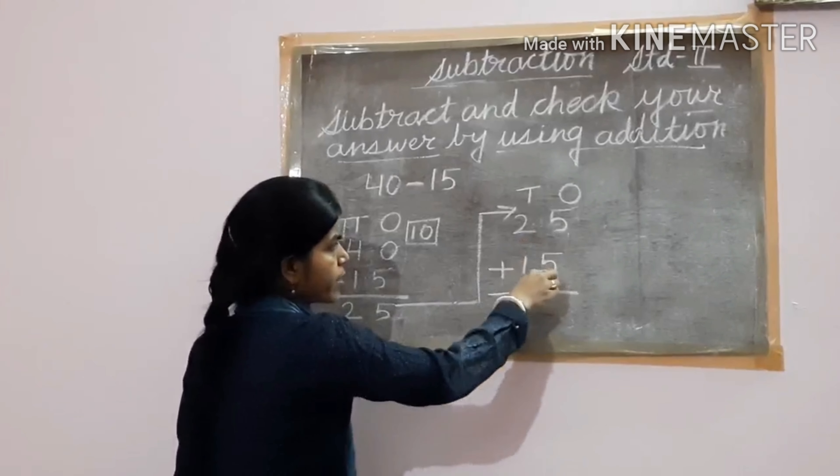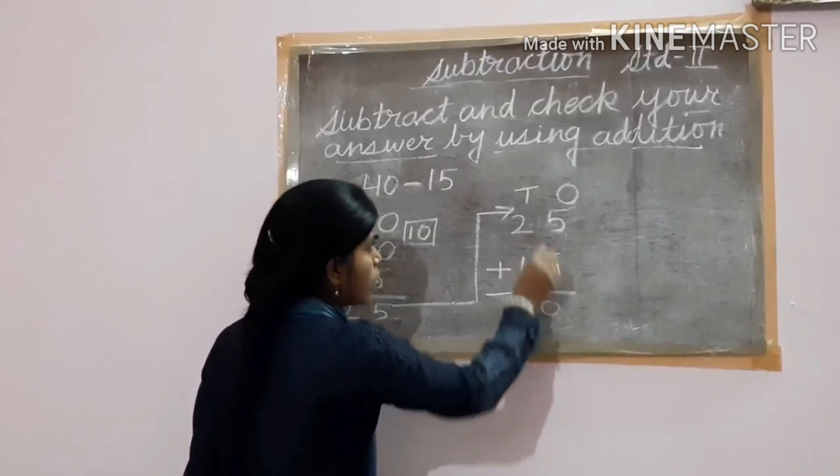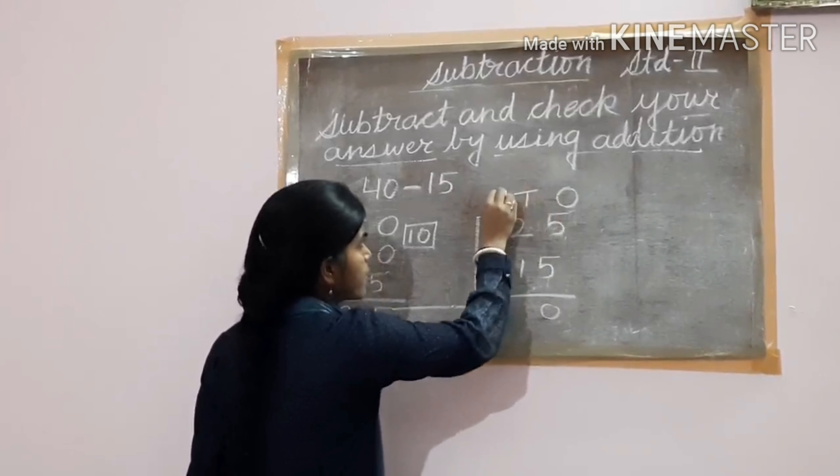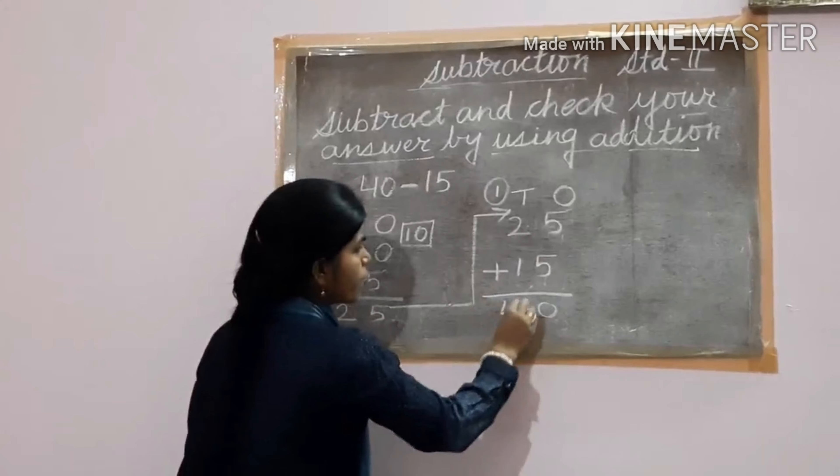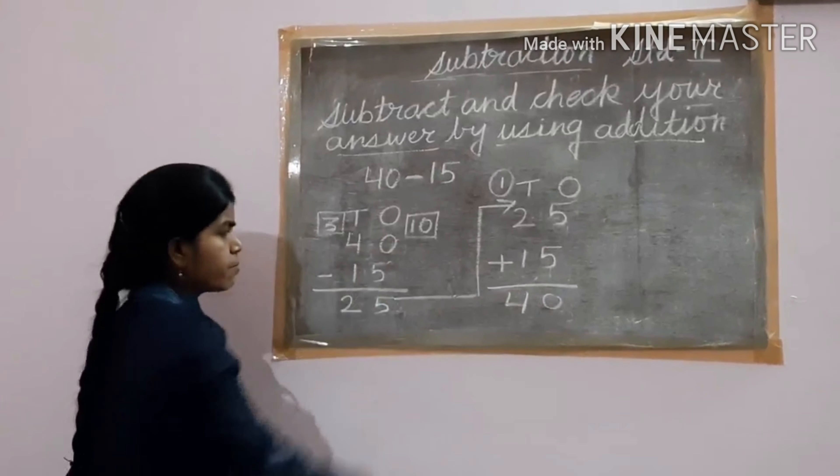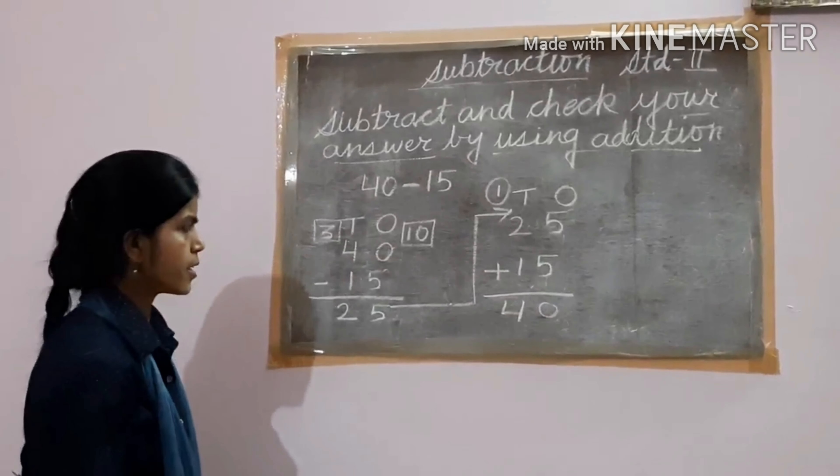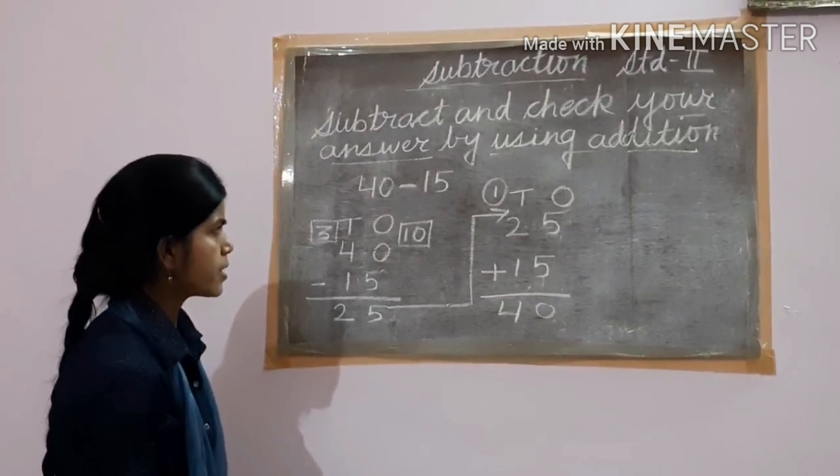Now again add: 5 plus 5, 10. 0, 1 carry over here. Now 1 and 2, 3 and 1, 4. 40. Here we are getting 40, so my answer is correct.